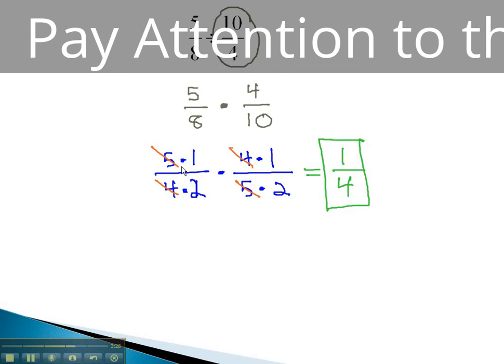It is important to note that when everything divided out of the numerator, it did not mean the answer was 0 over 4. It simply means when everything divides out, there is a 1 left over in the numerator.